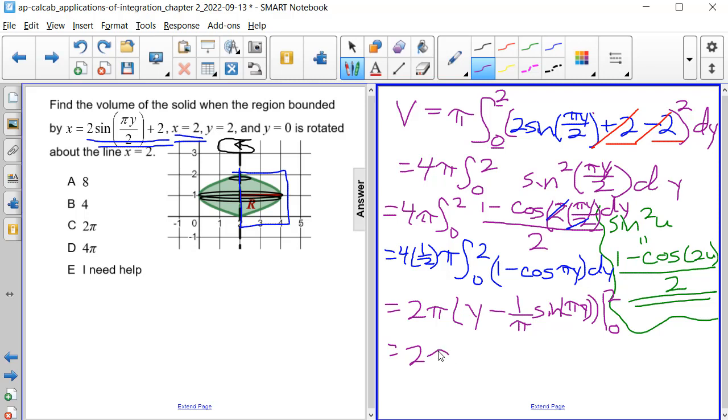So we still have a 2 pi here, and then we have 2 minus 1 over pi times the sine of 2 pi. And then we're going to subtract 0 minus 1 over pi times the sine of 0, because 0 times pi will give you 0. So we're going to have a 2 pi, and we're going to have 2 minus, the sine of 2 pi is 0, so this term goes away because it's equal to 0.